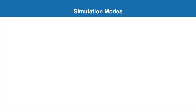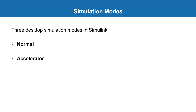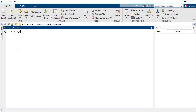The first tip that I would recommend is to check your simulation mode. For desktop simulations you can choose between the normal, accelerator, or rapid accelerator modes. Let's open an existing model to explain what these three simulation modes are and illustrate how your choice of simulation mode will affect the simulation speed.